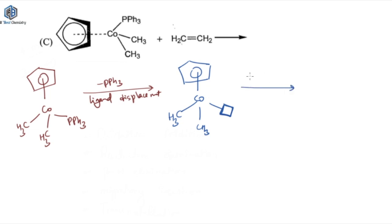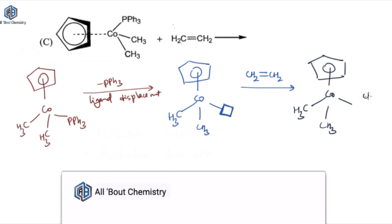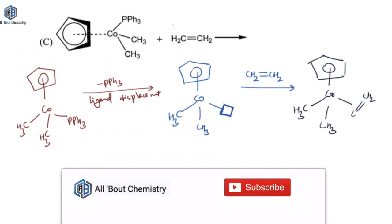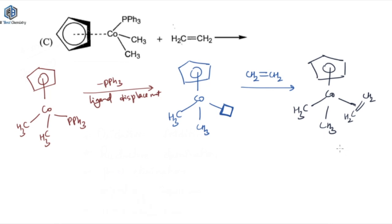So now you can add your ligand. We were having CH2=CH2 — ethylene — which gets added through the pi bond, coordinating to cobalt. In the next step, we will have 1,2-migratory insertion. On alkenes we generally see 1,2-migratory insertion. So one of the methyl groups will migrate to the second position of the alkene.